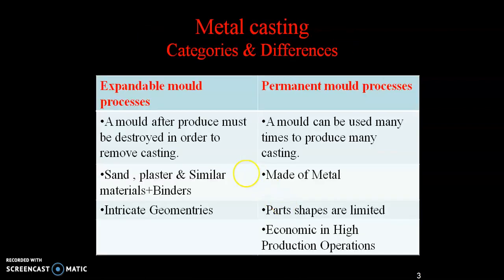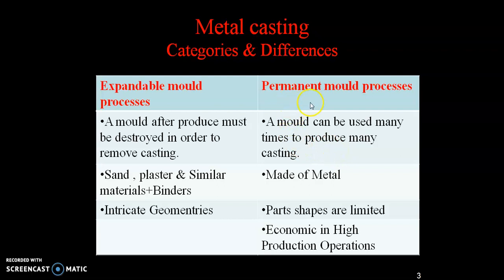Metal castings are classified into two different categories. One is an expandable mould process and another is a permanent mould process. A mould that must be destroyed after use in order to remove the casting is called an expandable mould process. A mould that can be used many times to produce multiple castings is called a permanent mould process. In the expandable mould process, only one mould is used to produce only one casting.